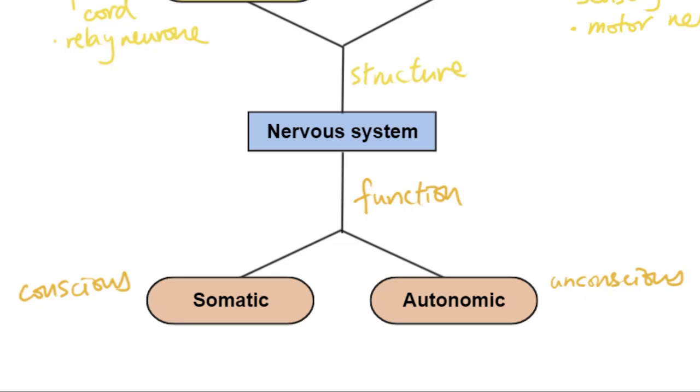Now obviously in certain situations the somatic nervous system can override it. For example, you might be trying to hold your breath while you're swimming. So sometimes those situations can happen, but most of the time we consider breathing or heart rate to be autonomic.